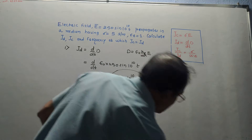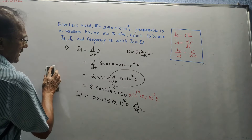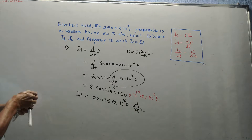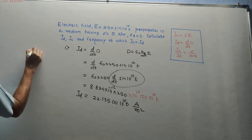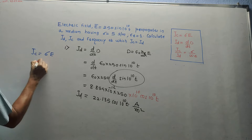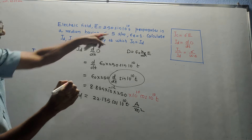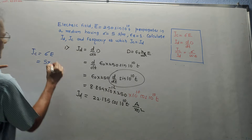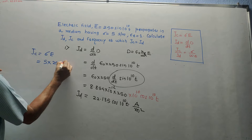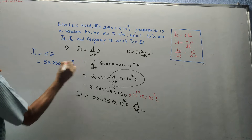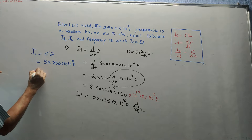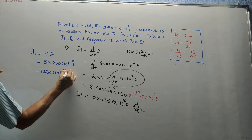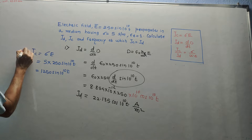The second part asks to calculate JC, the conduction current density. Using the formula JC equals sigma times E, where sigma equals 5 siemens per meter and E is 250 sin(10¹⁰ t), we get JC equals 1250 sin(10¹⁰ t) amperes per meter squared.